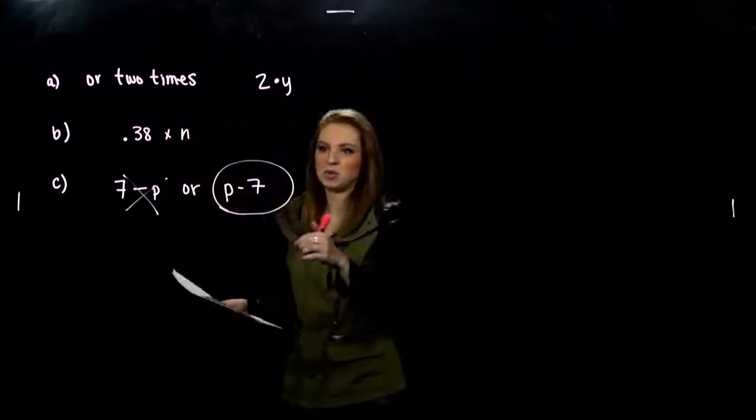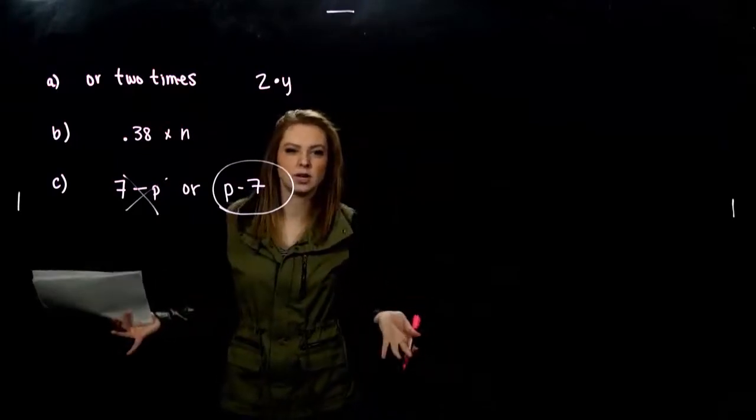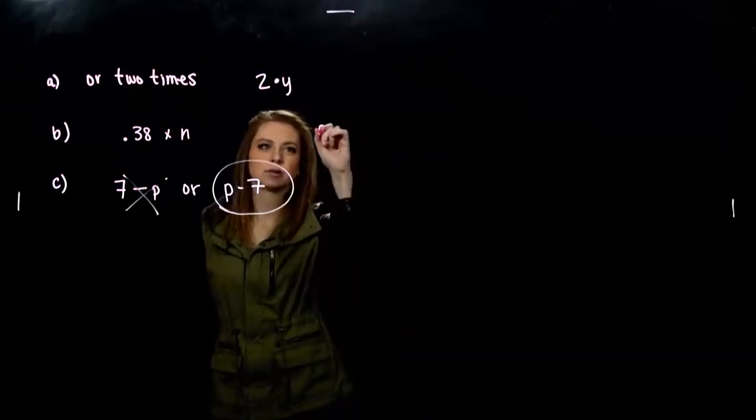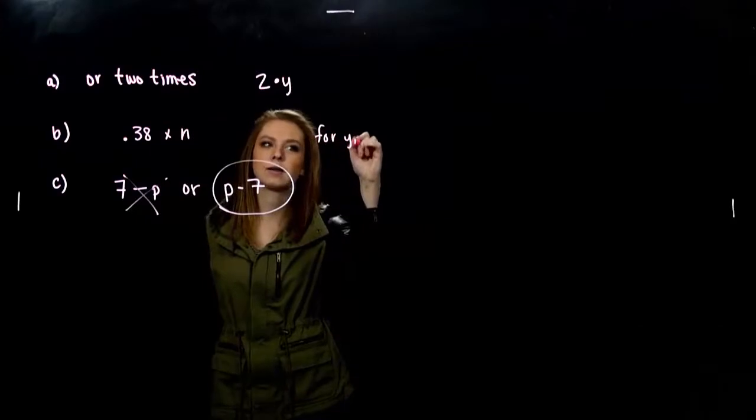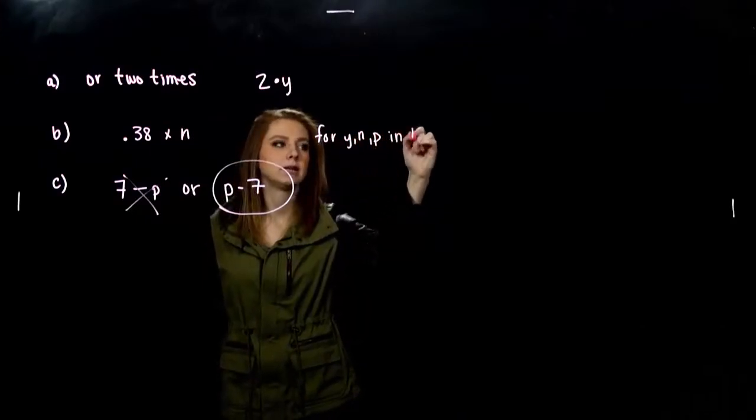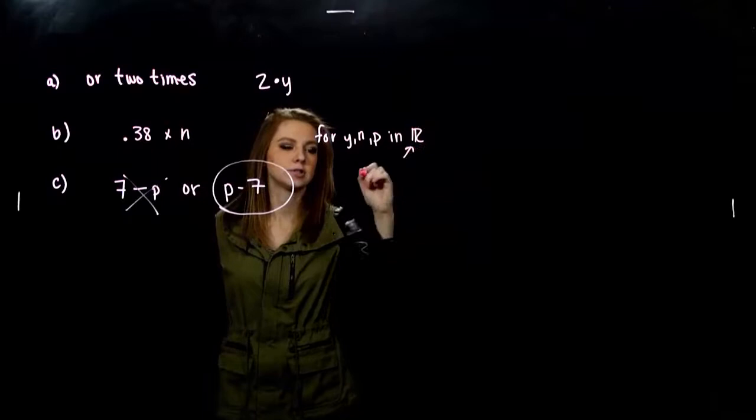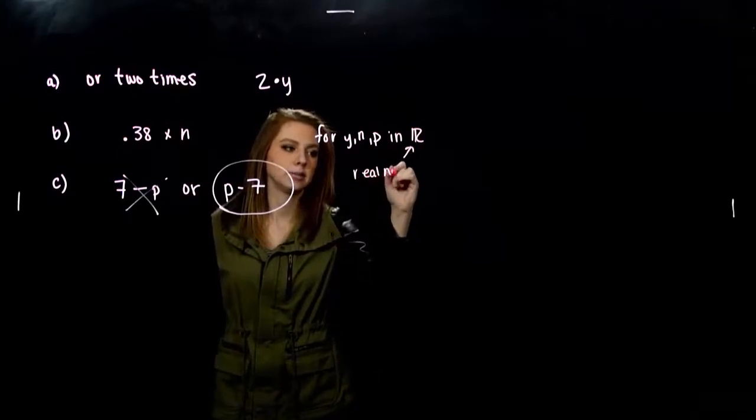And each of these variables, we just have to tell where they live. They're going to be nice real numbers. So I'm just going to say for y, n, and p in R. So this just means real numbers.